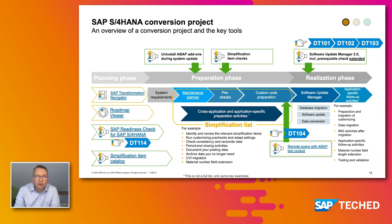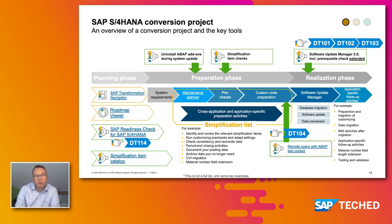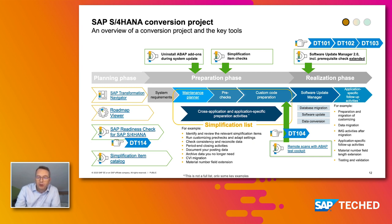The technical procedure is highly orchestrated across three phases: planning, preparation, and realization. Planning phase tools include the SAP Transformation Navigator for landscape design, the Roadmap Viewer for project methodology planning and execution, and the Readiness Check to verify prerequisites and provide effort statistics. Technical tools for the migration itself include the Maintenance Planner, pre-checks, and custom code preparation. Detailed coverage of these is available in session DT104, as well as sessions DT101, DT102, and DT103.